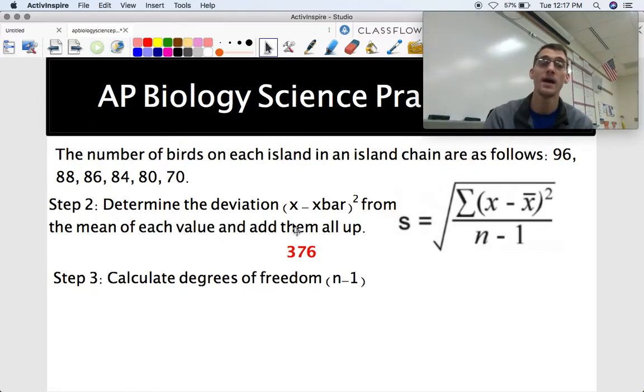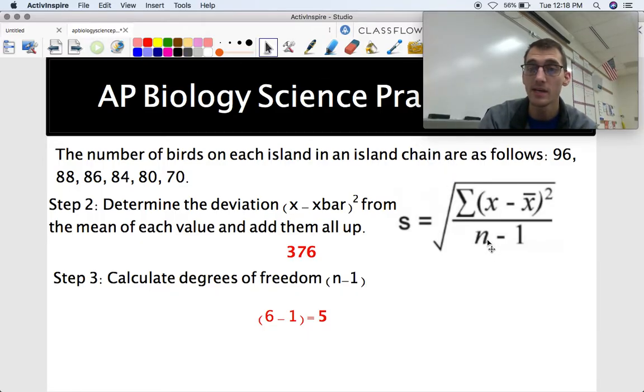And all I'm doing, once again, here's each of my values representing X minus X bar, which is the average, and square that, and you add them all up, and this is what we get for our data set, 376. Step three of this is calculate the degrees of freedom, and this part is super easy. All degrees of freedom is is basically how many data points do you have minus one. So basically, we have six different islands, which means our degrees of freedom is five, just because it's six minus one. Easy, right?